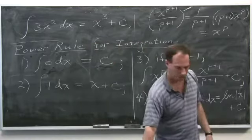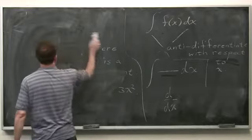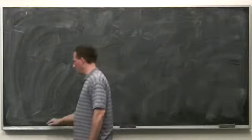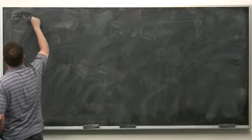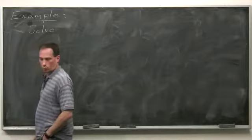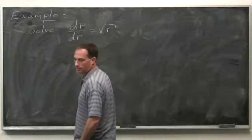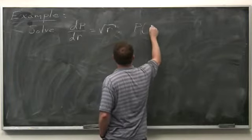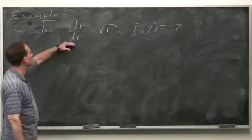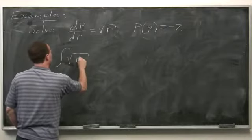An example using the power rule — an initial value problem. Solve dp/dr equals the square root of r, with p equals minus 7 when r equals 9. The derivative of p with respect to r is the square root of r, so p is an anti-derivative of the square root of r with respect to r — written as r to the one-half.